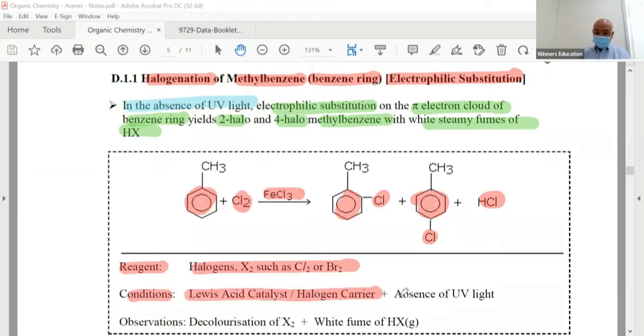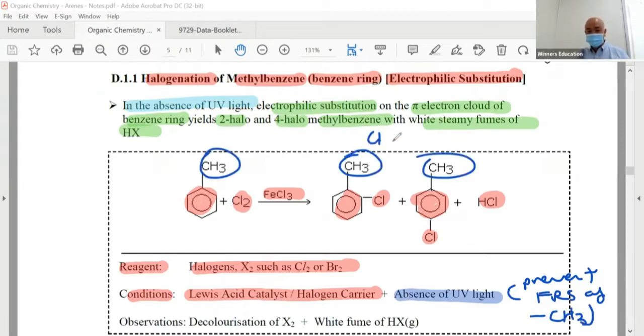Why absence of UV light? Because this is to prevent free radical substitution of the side chain. You don't want this to become CH2Cl. Normally we say absence of UV light - we do it in the dark, cannot be too shiny or too bright.